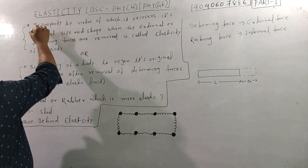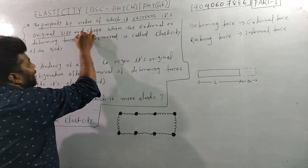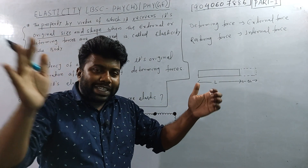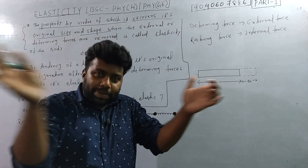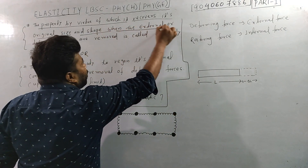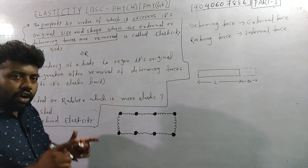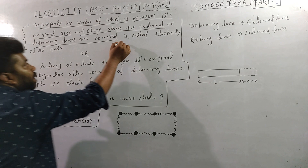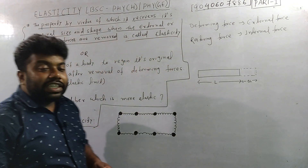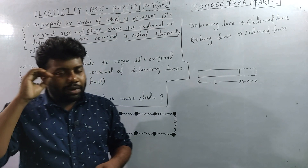It is the property by virtue of which a body recovers its original size and shape when the external or deforming force is removed. This is called the elasticity of the body.